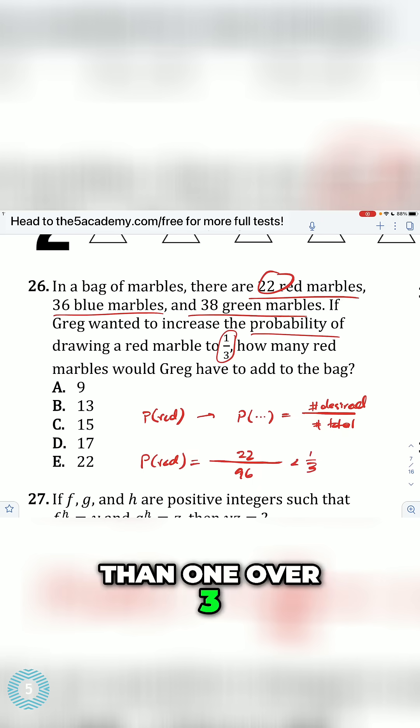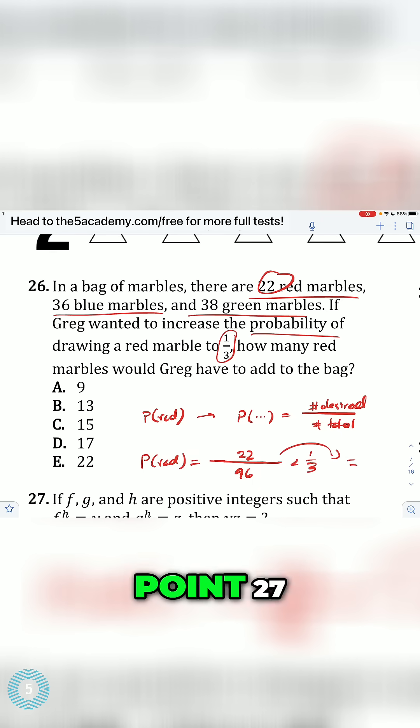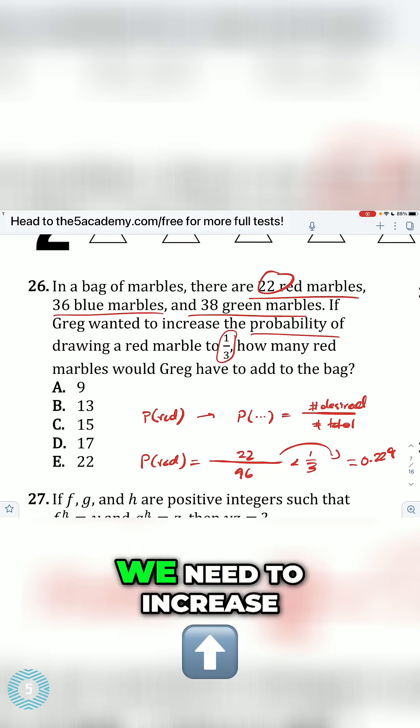And this is less than 1 over 3. I think this equals something along the lines of 0.27. So it's 0.22, 0.229. So that's obviously less than 1 over 3. We need to increase.